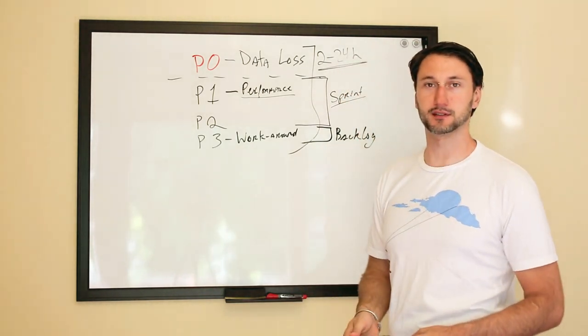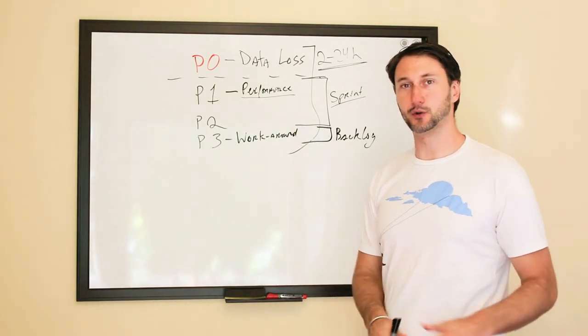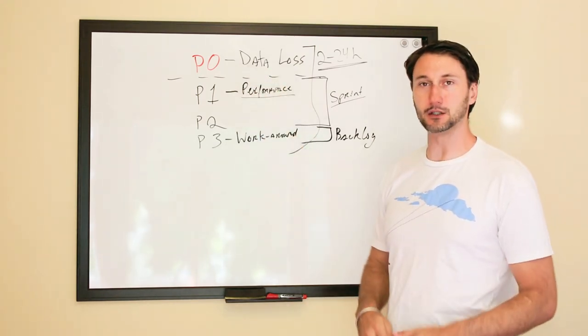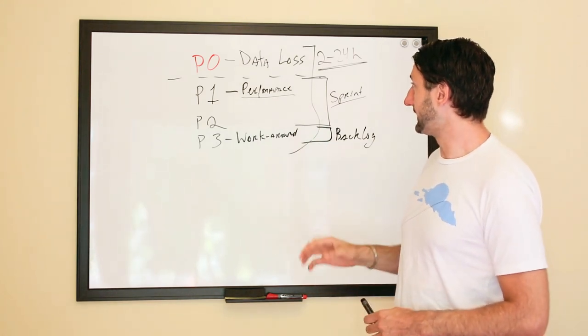Anything P1 through P3 goes into the software development process. But P0s—data loss—that's where you're really having an issue and that needs to be addressed outside of your iteration, outside of your sprint.